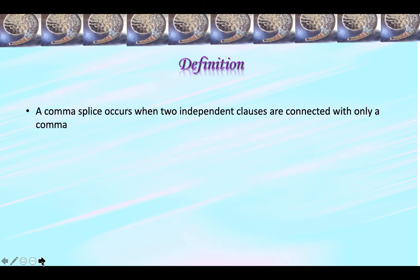A comma splice occurs when two independent clauses are connected with only a comma. As writers, we find many instances in which two ideas that might be written in separate sentences are so closely related that we want to put them in the same sentence. But when we join those two independent clauses — those two sentences — we have to be careful to use correct punctuation and conjunctions. If we don't, we create either run-on sentences or comma splices.